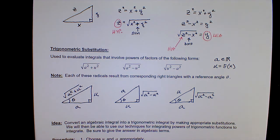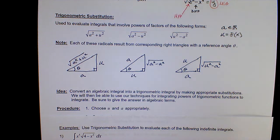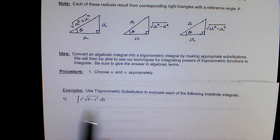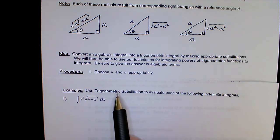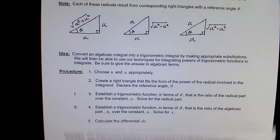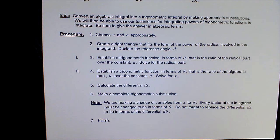Then comes the procedure. We're going to convert an algebraic integral into a trigonometric integral, and then use what we've learned from previous lessons to integrate that new trigonometric integral. The procedure may look exhaustive, but it's a nice little cookbook recipe. Really, there are two major steps — Roman numeral one and Roman numeral two.